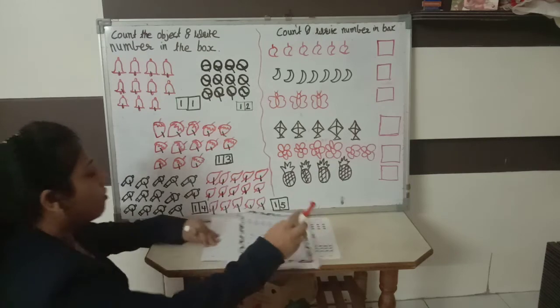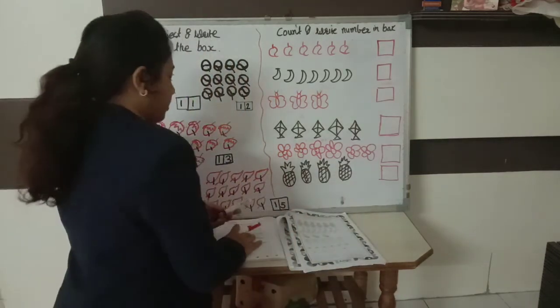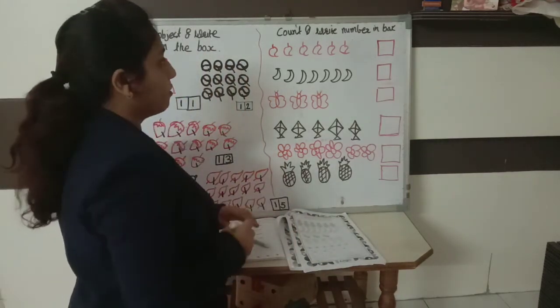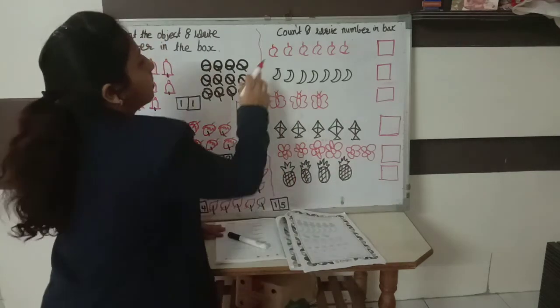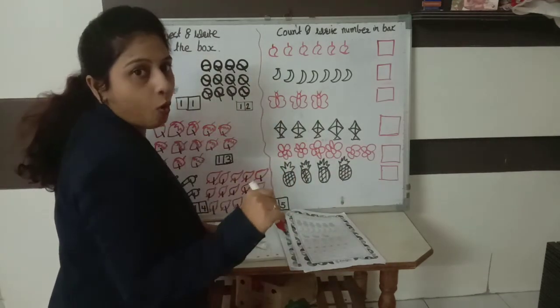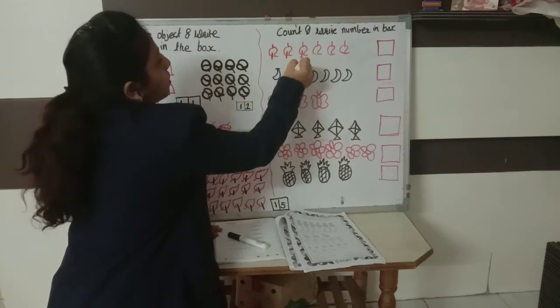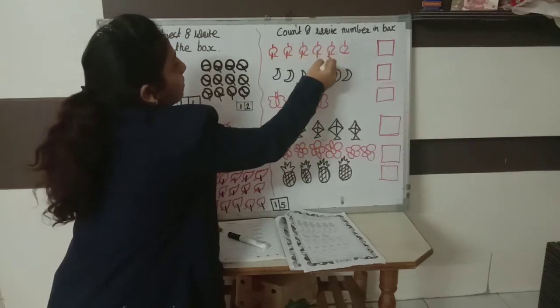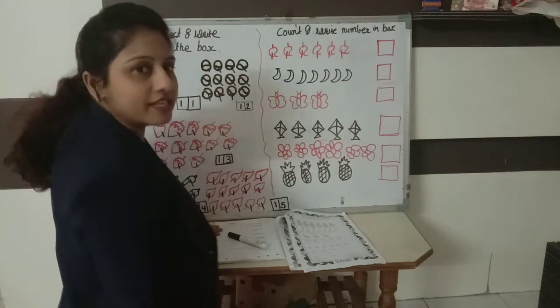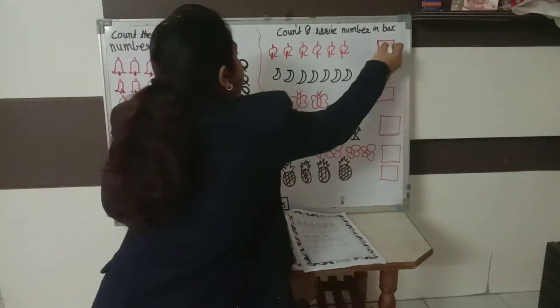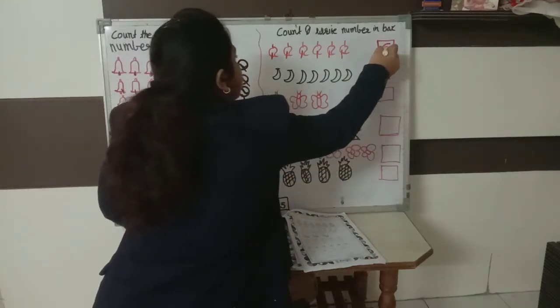Let's count. 1, 2, 3, 4, 5 and 6 mangoes. How many mangoes? 6.